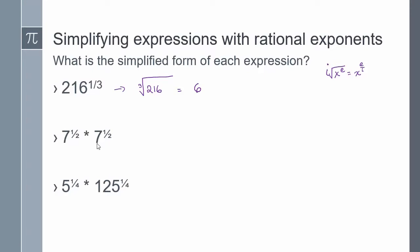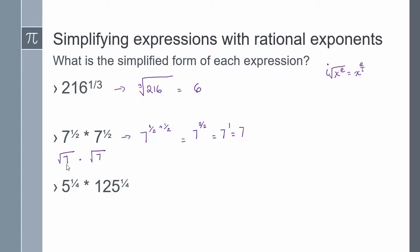For 7 to the power of 1 half times 7 to the power of 1 half, there are two ways. You can write it as the square root of 7 times the square root of 7. Or, since the bases are the same, I can add my exponents: 7 to the power of 1 half plus 1 half gives me 2 halves, which is 7 to the power of 1, which is 7. Alternatively, square root of 7 times square root of 7 is the square root of 49, which is also 7.